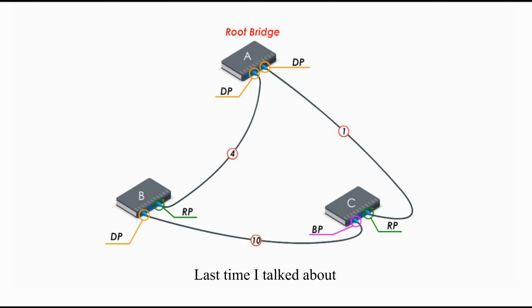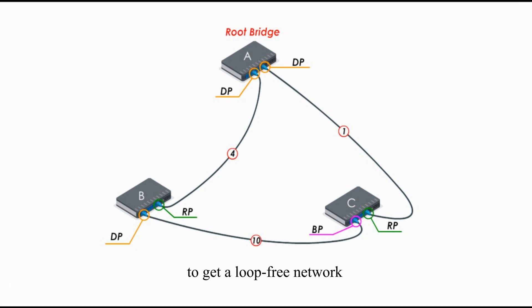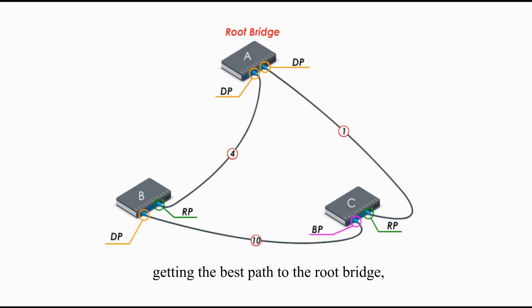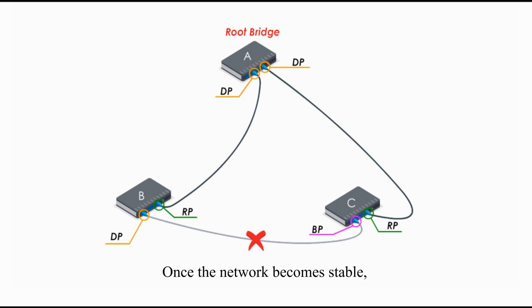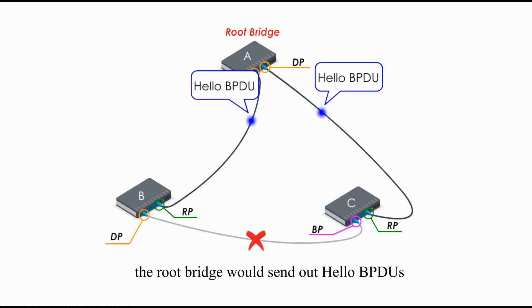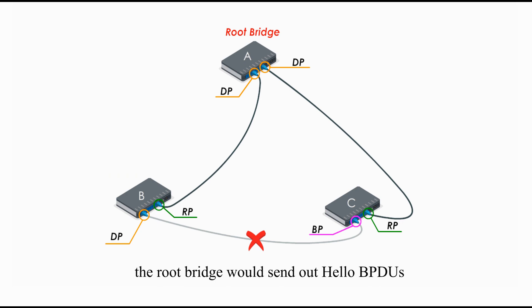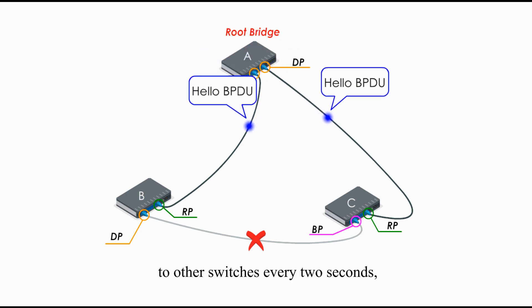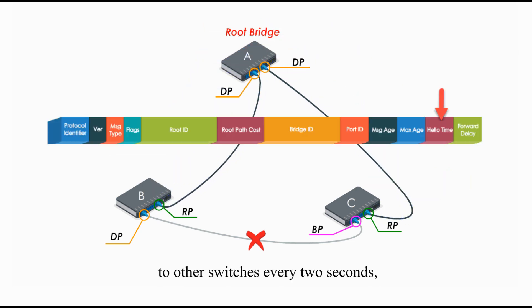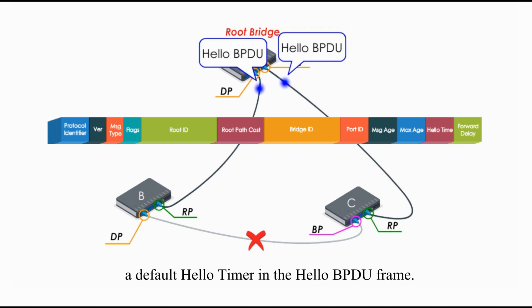Last time I talked about how switches exchange Hello BPDUs to get a loop-free network by electing a root bridge, getting the best path to the root bridge, and assigning roles to ports. Once the network becomes stable, the root bridge would send out Hello BPDUs to other switches every 2 seconds — the default Hello timer in the Hello BPDU frame.